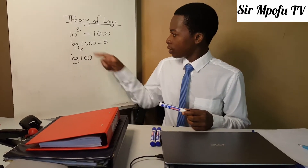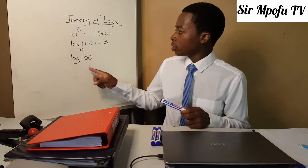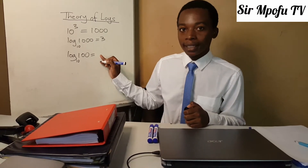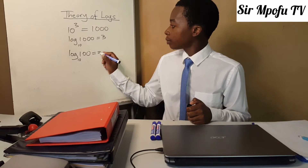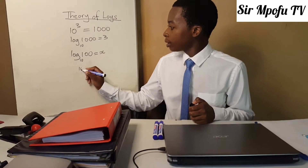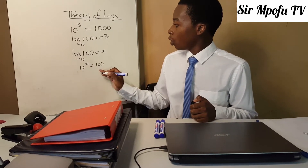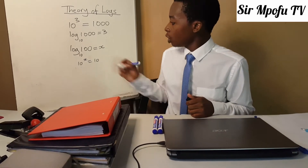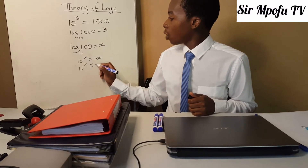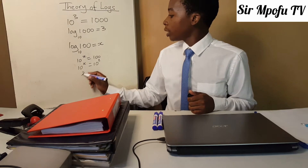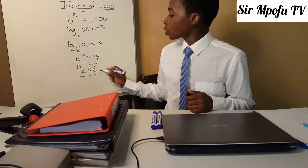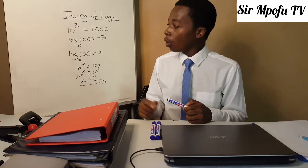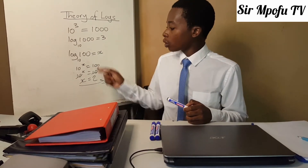To find log 100, automatically there is a base 10. We introduce algebra — let us use x. So 10 to the power of x must equal 100. We make the bases the same: 10 to the power of x equals 10 to the power of 2, since 100 is the same as 10 squared. If bases are the same, the powers are also the same, so x equals 2. Therefore log 100 in base 10 equals 2. Punch log 100 on your calculator and your answer will be 2.